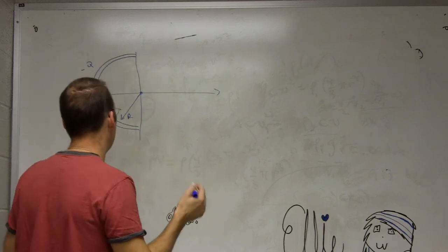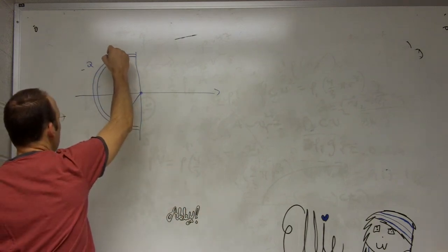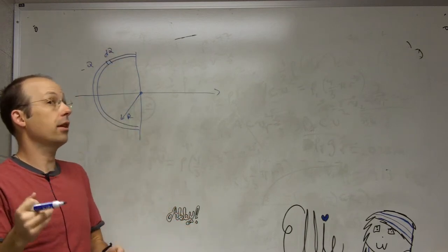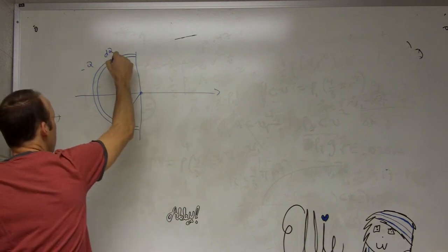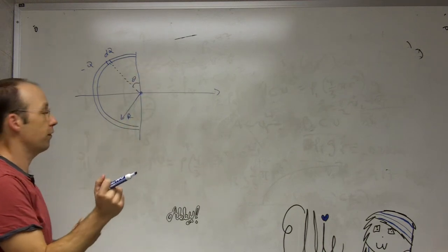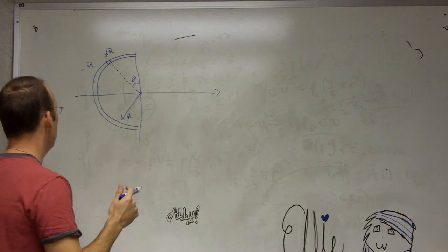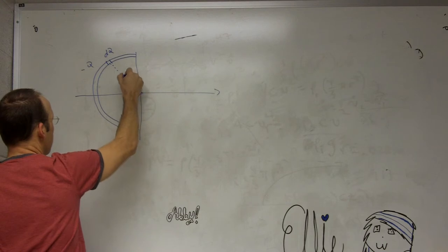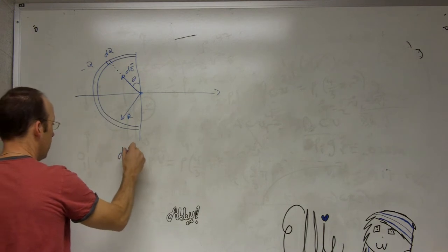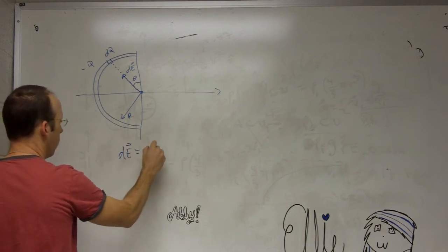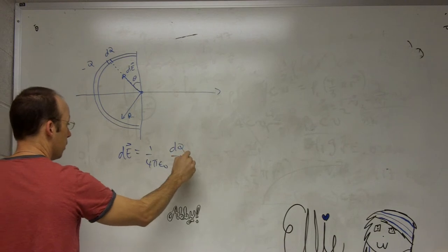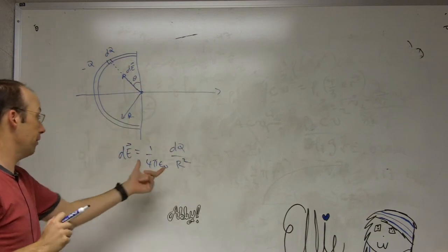So the way we do this is we always say, okay, I'm going to break this into a little piece. I'll call that DQ. I'm going to find the electric field due to that piece, and then I'm going to add up all the electric fields to all the pieces. So let's locate this piece by the angle theta right there, which isn't the normal use of theta, but it doesn't matter. You can do whatever you want. That's going to make an electric field going this way, DE.